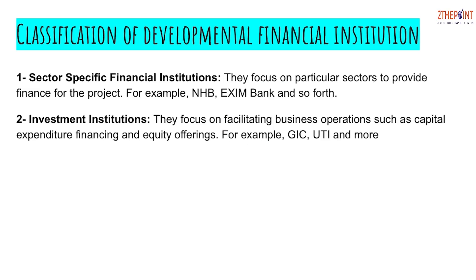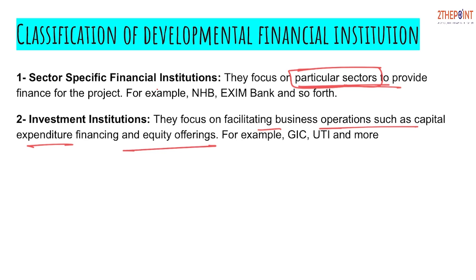DFIs are classified into two types. First, sector-specific institutions, which focus on the development of a particular sector — for example, the export sector or the pharma sector — providing loans only within that sector. Second, investment institutions, which focus on facilitating business operations such as capital expenditure financing and equity offerings, playing a vital role in the financial markets of the country.